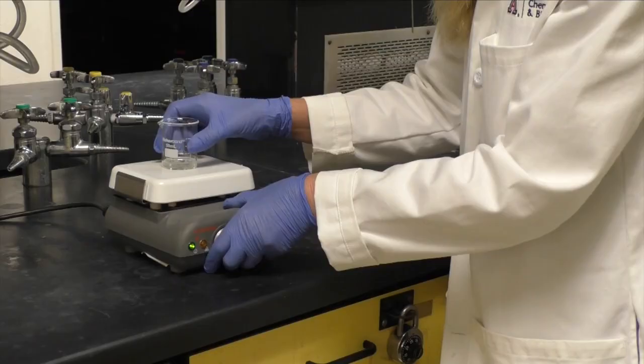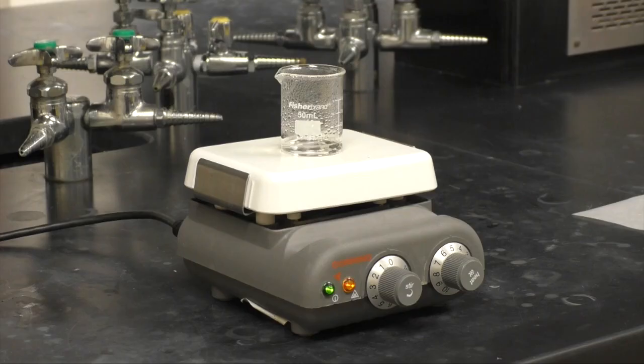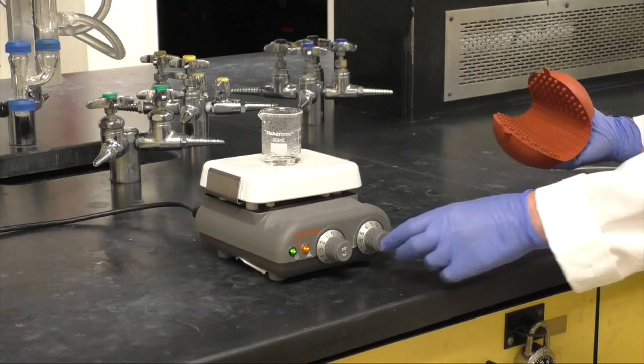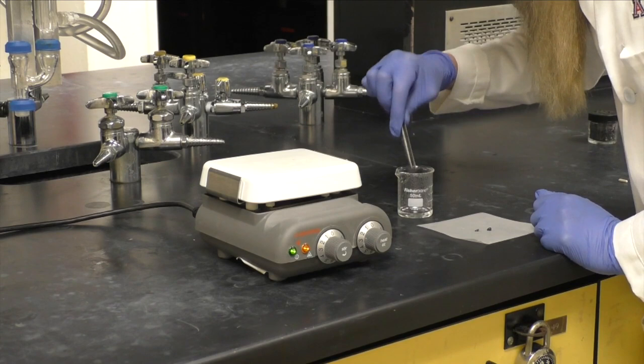Heat the beaker for about 5 minutes until the solution boils. You'll need to set your hot plate to about 5 to 6. Remove the beaker and remove the boiling stones. While the beaker is cooling, measure out 2 milliliters of 6 molar hydrochloric acid.